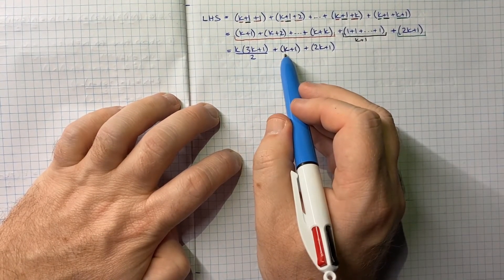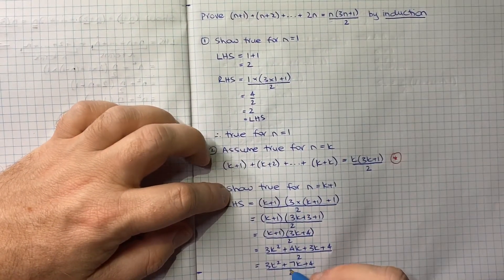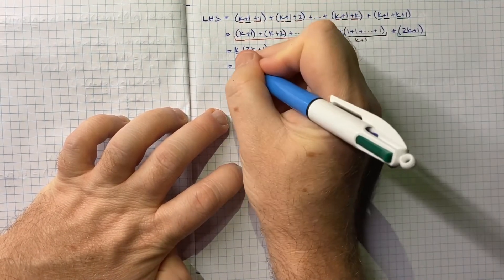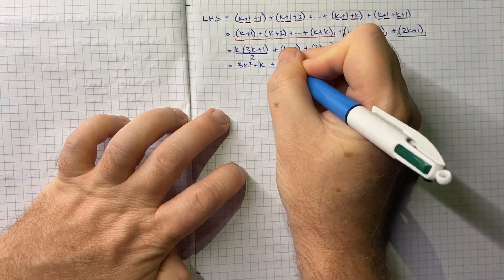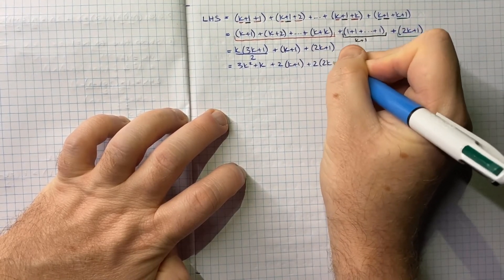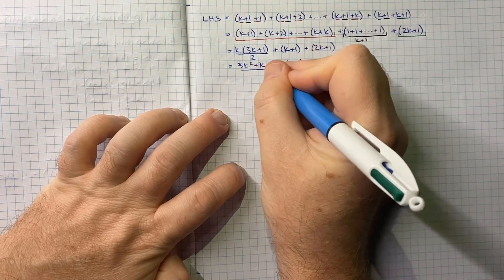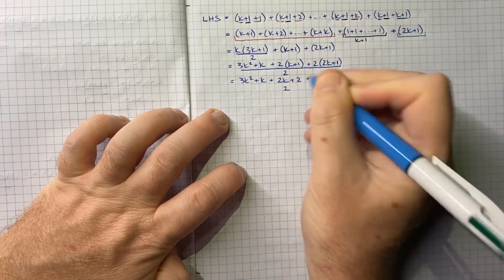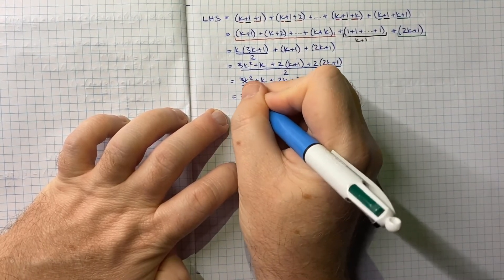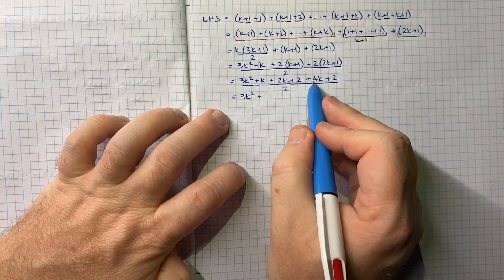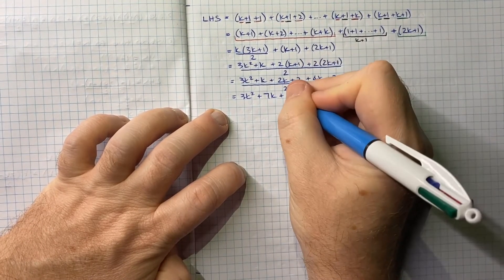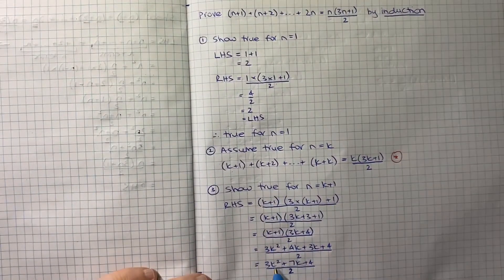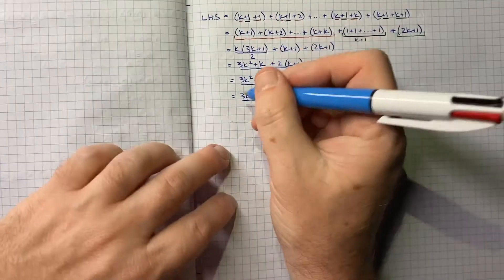Now we get a common denominator of 2, since that's what the right hand side has. Expanding: k(3k+1)/2 + (k+1) + (2k+1) = (3k²+k)/2 + 2(k+1)/2 + 2(2k+1)/2 = (3k²+k + 2k+2 + 4k+2)/2 = (3k²+7k+4)/2. That equals the right hand side — so this is confirmed.